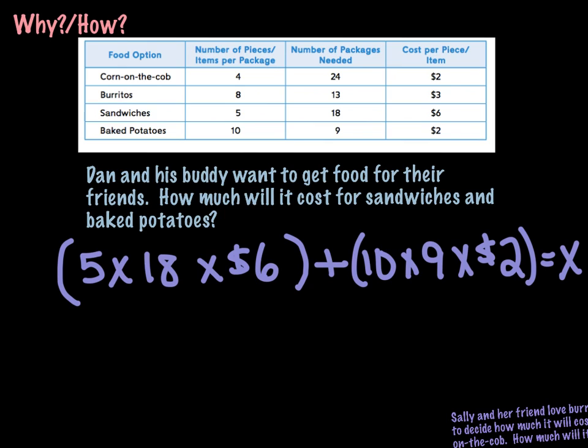So the first set of parentheses is all the information that we need for the sandwiches, and the second set of parentheses is all of the information we need for the baked potatoes. And it tells us that they're wanting sandwiches and baked potatoes, so that's how I know we're going to add all of that together.